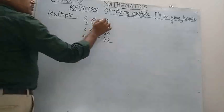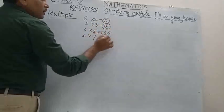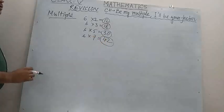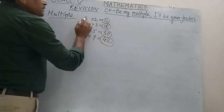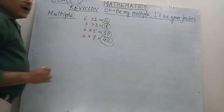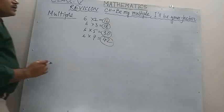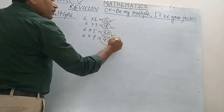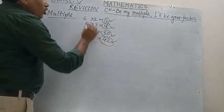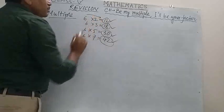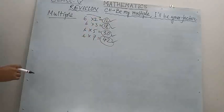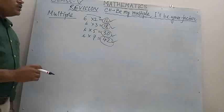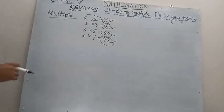Now you can see, 12, 18, 30, 42 — all came by multiplying 6 by an integer. That is, all these numbers — 12, 18, 30, 42 — are multiples of 6.